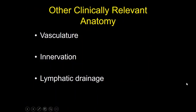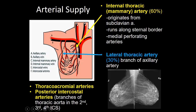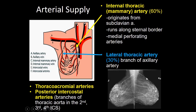The other clinically relevant anatomy includes the blood supply, innervation, and lymphatic drainage. For arterial supply, 60% comes from the internal thoracic or internal mammary artery, a branch of the subclavian artery, which runs along the sternal border and has multiple medial perforating arteries. This is important because if you're doing a biopsy from a medial approach, there's a chance you could pass through one of these perforating arteries and cause a significant hematoma. Another third comes from the lateral thoracic artery, a branch of the axillary artery. Most of the time we will not see the arteries on imaging, but if they calcify, as on this mammogram, you can see the arterial system quite well.